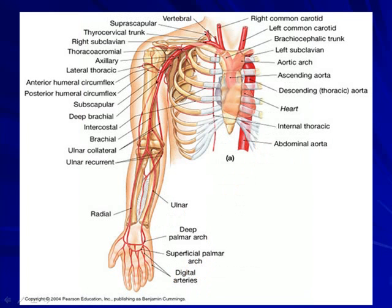These are up-close pictures of what we already identified. Off the brachiocephalic trunk, branching off the aorta, you should identify the right subclavian, the axillary artery, the brachial artery and its bifurcations, and both the radial and ulnar arteries. You should also be able to identify the internal thoracic artery.